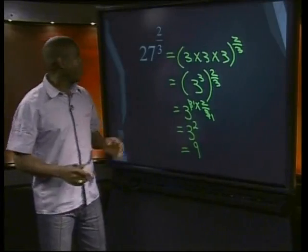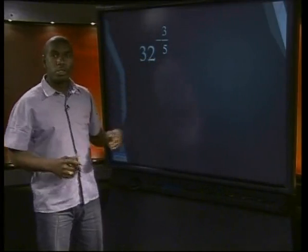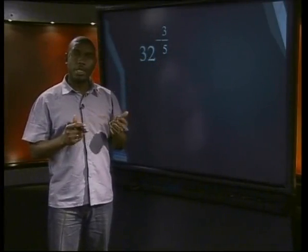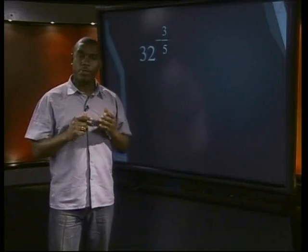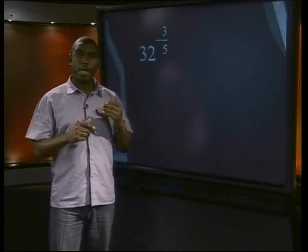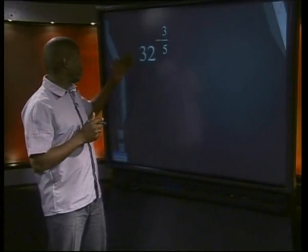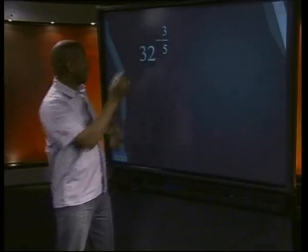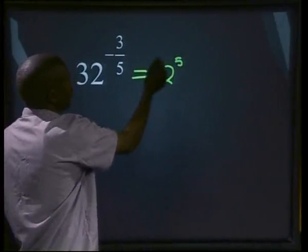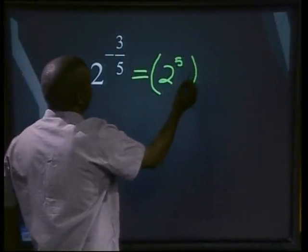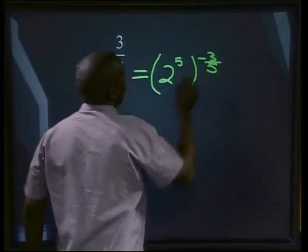Let us have a look at 32 to the power of minus 3 over 5. Just remember the powers of 2: they are 2, 4, 8, 16, 32, 64, 128, etc. Now what is 32? 32 will be the same as 2 to the power of 5. But in this case, it will be 2 to the power of 5, all to the power of minus 3 over 5.